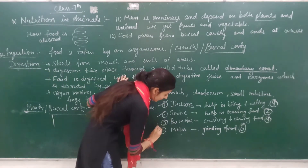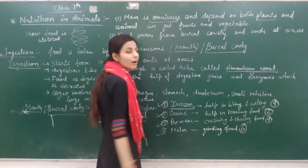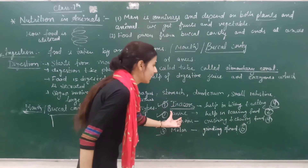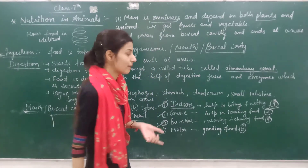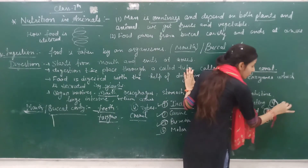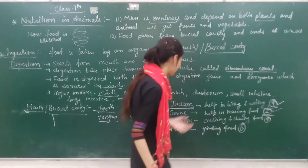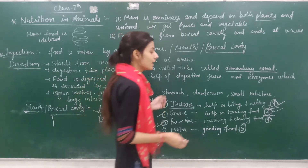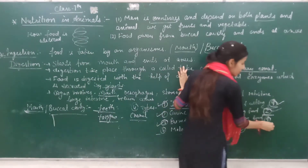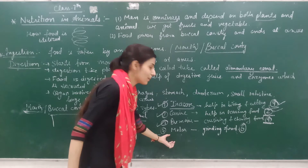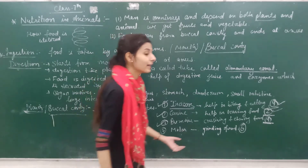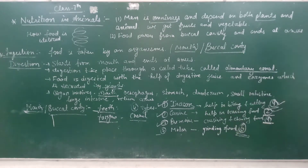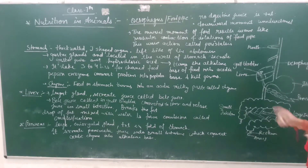The four types of teeth are: incisors, canine, premolar, and molar. Incisors are used for cutting. Canine teeth are used for tearing. Premolars help to crush and grind. Molars help to grind food. Next is our oesophagus.